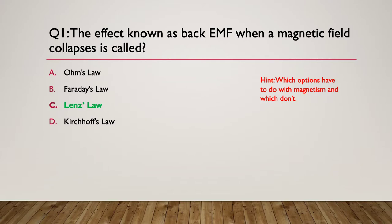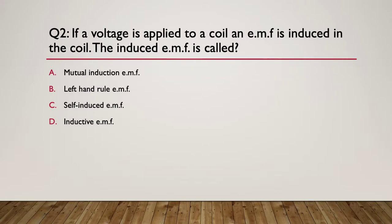So Lenz's law states that when a magnetic field collapses, it will establish a current in the opposite direction to that which originally established that magnetic field that's collapsing.